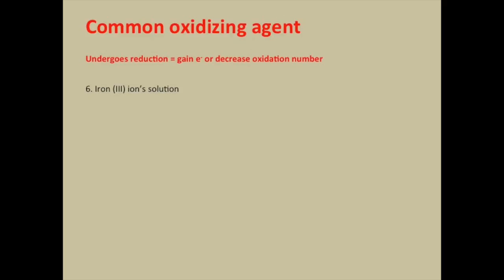The next oxidizing agent is iron(III) solution. Any solution containing iron(III) ions, such as iron(III) nitrate or iron(III) chloride, shows similar reactions. The reaction is simple — iron(III) is reduced to iron(II), and the color change is from yellow-brown to pale green.